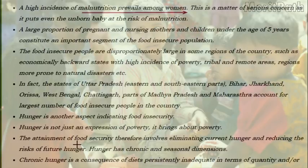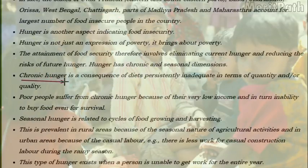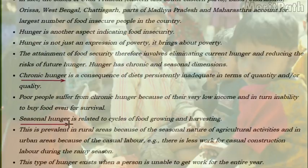Hunger is of two types: chronic hunger and seasonal hunger. Chronic hunger is a result of consistently low quantity and quality of diet. Both chronic and seasonal hunger have decreased in rural and urban India. Food security requires elimination of present and future hunger.